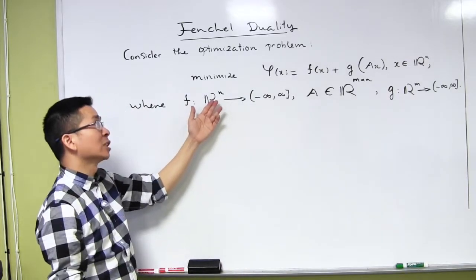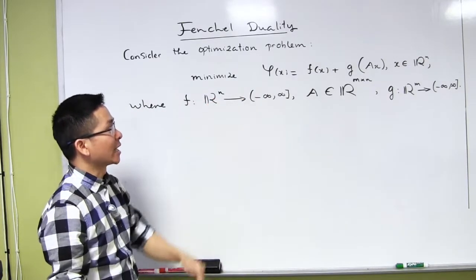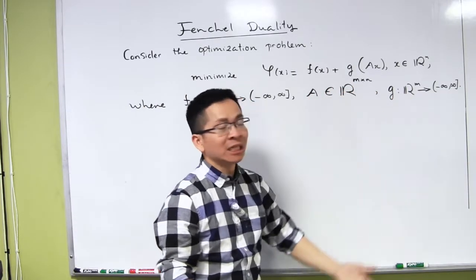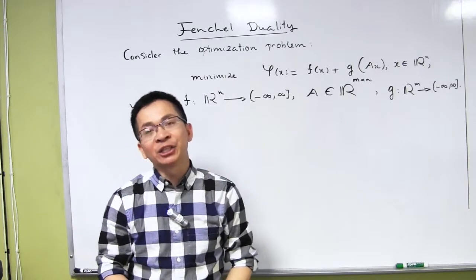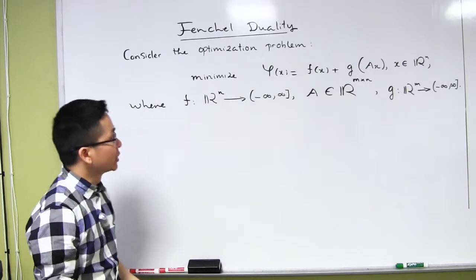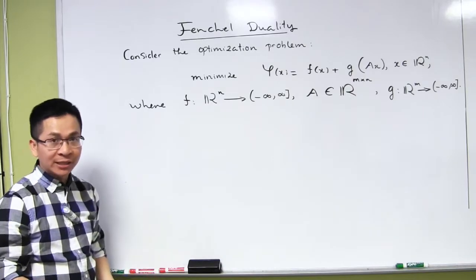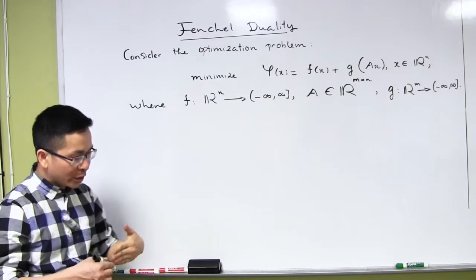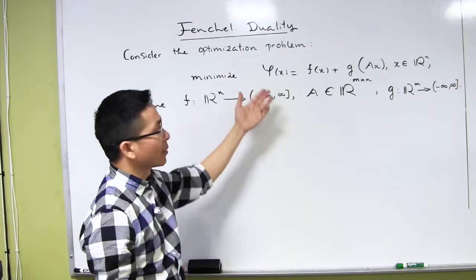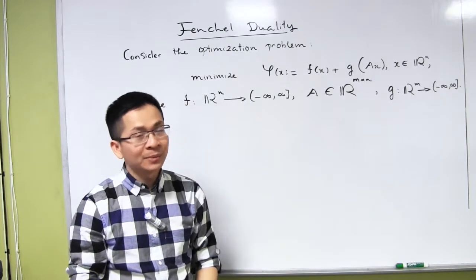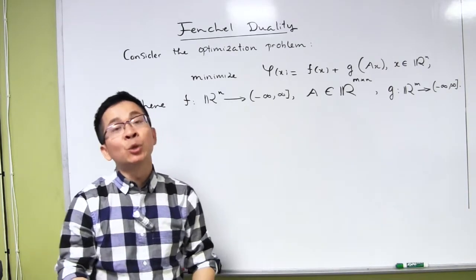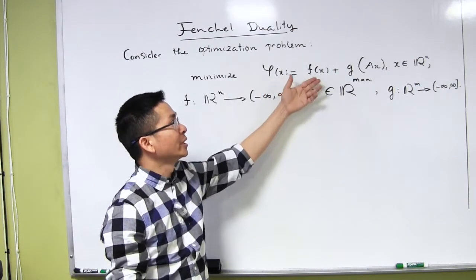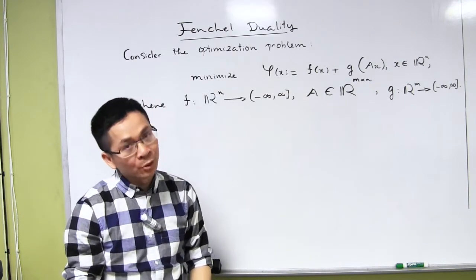Here, f is a function from R^n to the extended real line, A is an m by n matrix, and g is a function from R^m to the extended real line. We are going to use the tools of Fenchel conjugates to study this problem. Specifically, we are going to define a new problem called a dual problem, with the hope that the dual problem is easier to solve and has a close relationship with the original problem called the primal problem.